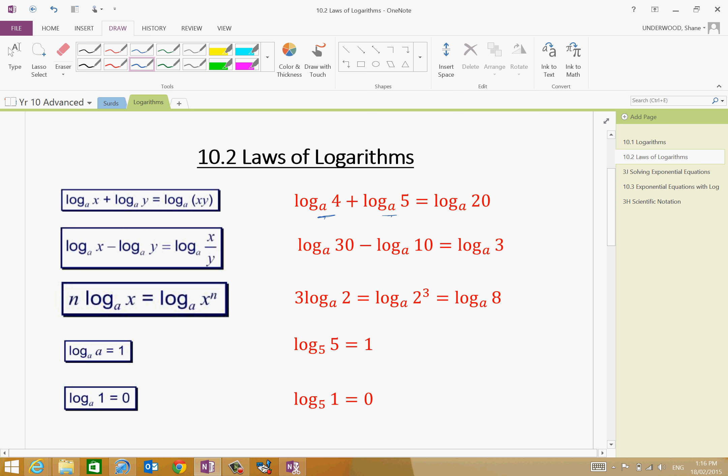Then what we can say is log to the base a of 4 plus log to the base a of 5, if I'm adding those together, is equal to log to the base a of 20. In other words, we're saying that we're multiplying this here.